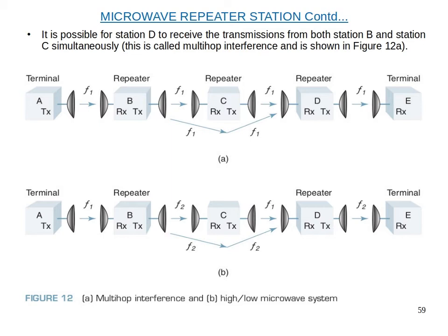Considering figure B, F1 frequency is assigned to station B and F2 frequency is assigned to station D. In this case, two different frequencies arrive at repeater station D, and we can discard the unwanted frequency F2 using the channel separation network.